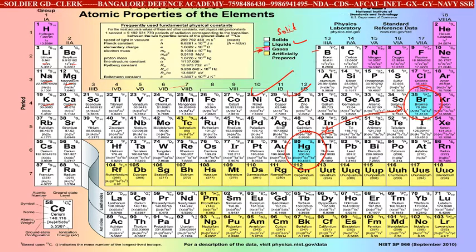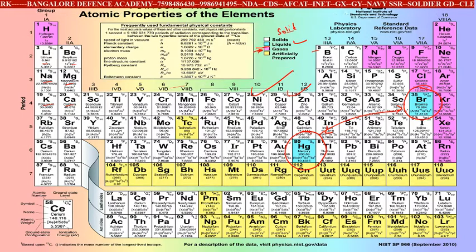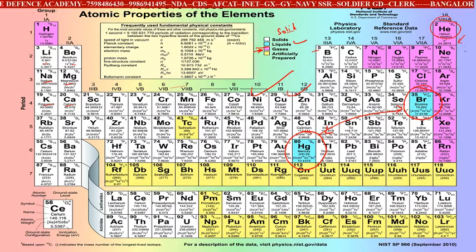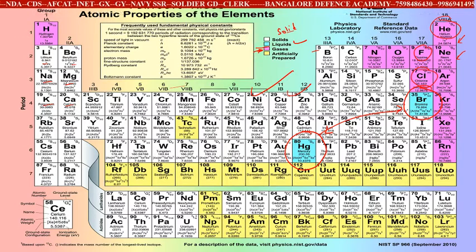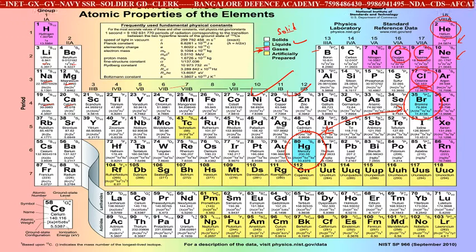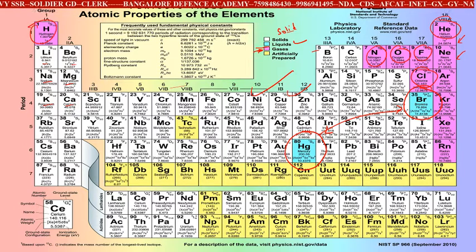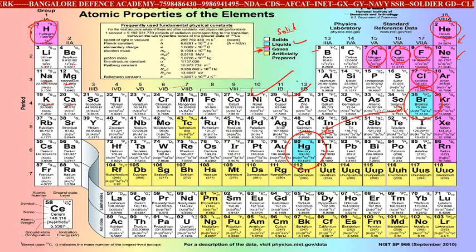Gaseous materials include, on the right-hand side shown in pinkish color, all the inert gases: helium, neon, argon, krypton, xenon, and radon. Halogens — fluorine and chlorine — are also in gaseous state. Oxygen is a gas, nitrogen is a gas, and hydrogen is also a gas. These are the important gases present on this planet.